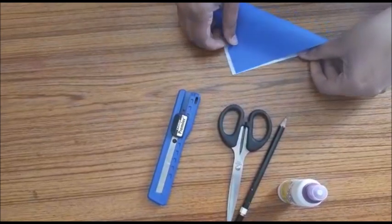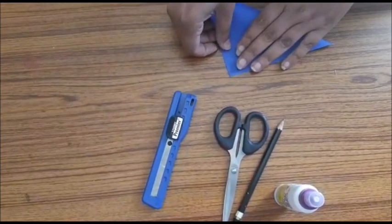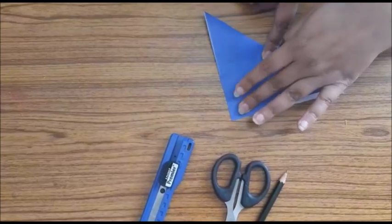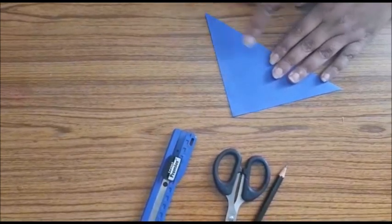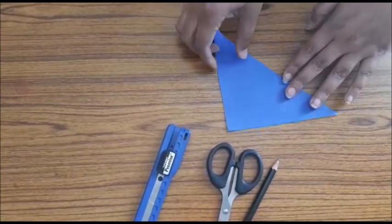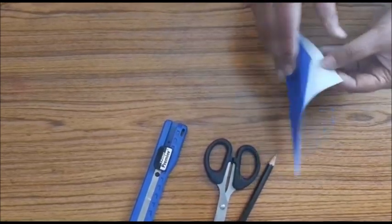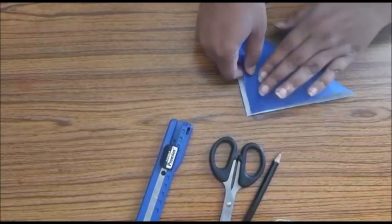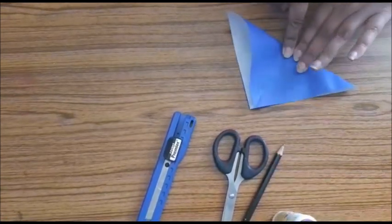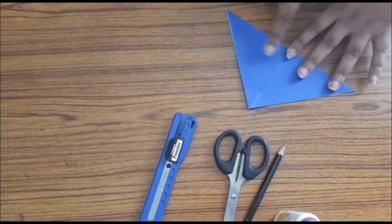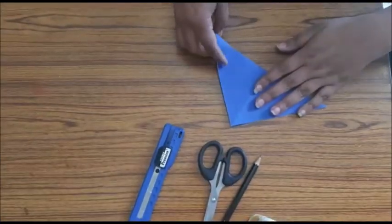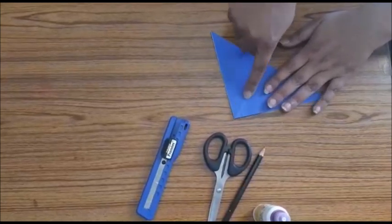First thing I'm going to do is fold this. I need a neat sharp line. Once this is done, then I'm going to open it. Now I have my triangle here and I have the center as well.